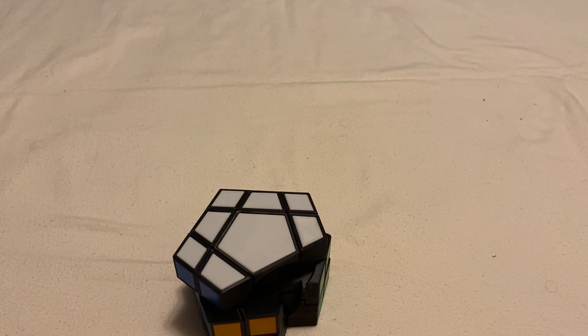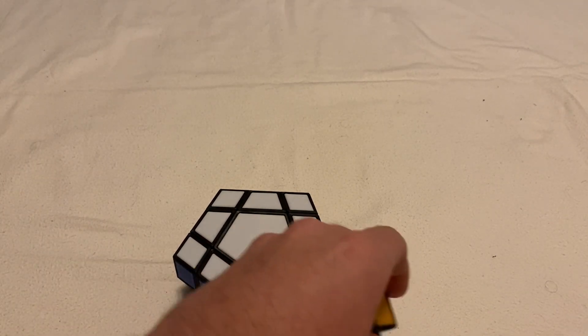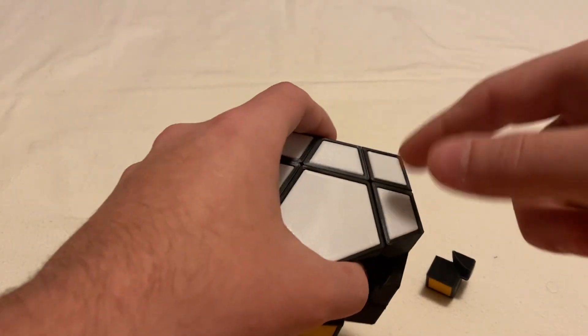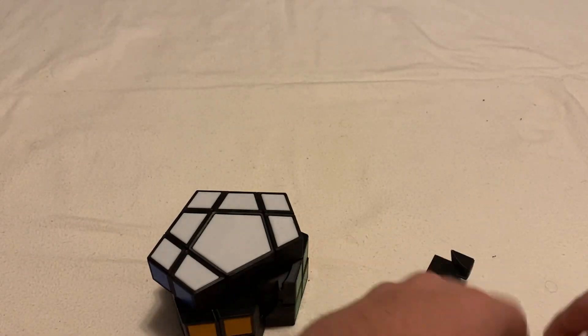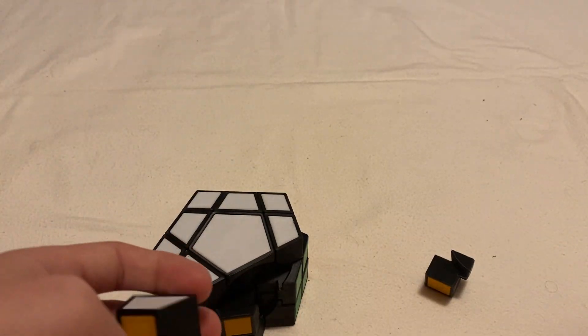So, while a 3x3 has eight corners, this one has ten corners, because there's five on each side instead of four. It also has 15 edges instead of 12 edges, like a 3x3 does.